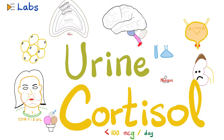Hey guys, it's Medicosis Perfectionist, where medicine makes perfect sense. Let's continue our lab playlist. In previous videos, we talked about serum chloride, urine chloride, beta-2-microglobulin, methemoglobin, uric acid in the blood and urine, and sputum cytology. Today, let's talk about urine cortisol. Why do you want to measure this? Because maybe you have Cushing syndrome, or maybe Addison disease, or other diseases.